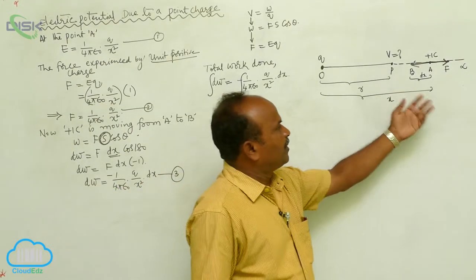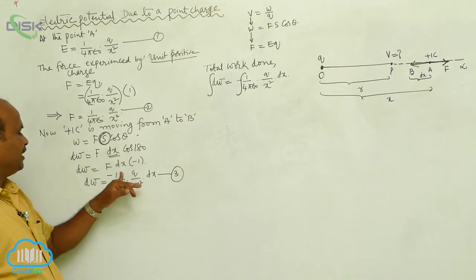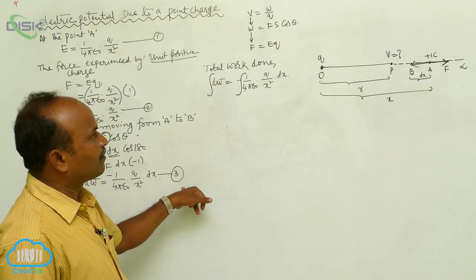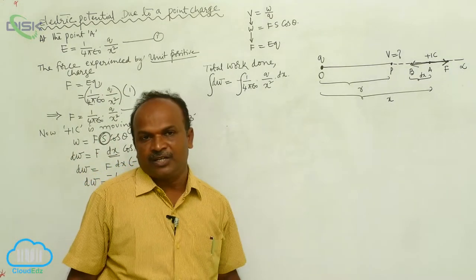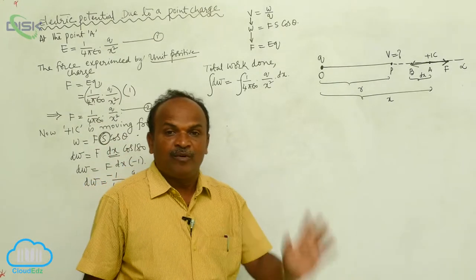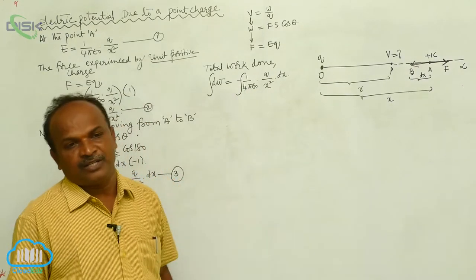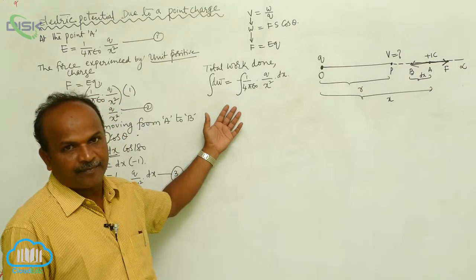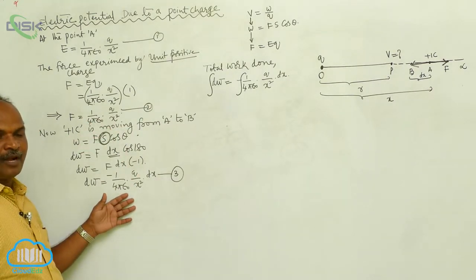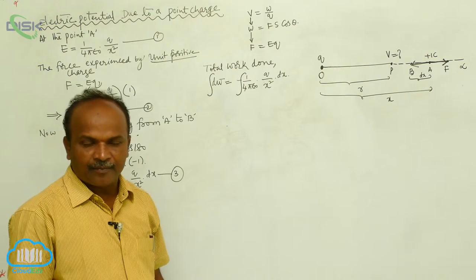The work done by a unit positive charge in moving from A to B displacement: dW equals minus 1 divided by 4πε₀ times q divided by x² times dx. This is equation number 3. In order to calculate the potential difference, you require the work done in moving from infinity to that particular point. In order to calculate the total work done, that equation must be integrated.